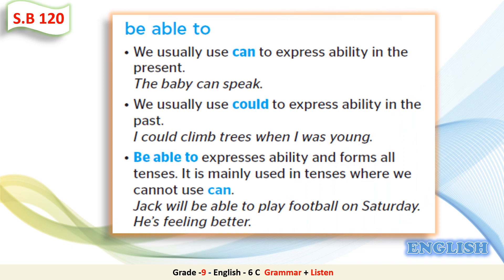Now let's read this grammar note together. 'Be able to': We usually use 'can' to express ability in the present – for example, 'The baby can speak.' We usually use 'could' to express ability in the past – for example, 'I could climb trees when I was young.' Third, 'be able to' can express ability across all tenses, and is mainly used in tenses where we can't use 'can' – for example, 'Jack will be able to play football on Saturday. He is feeling better.'